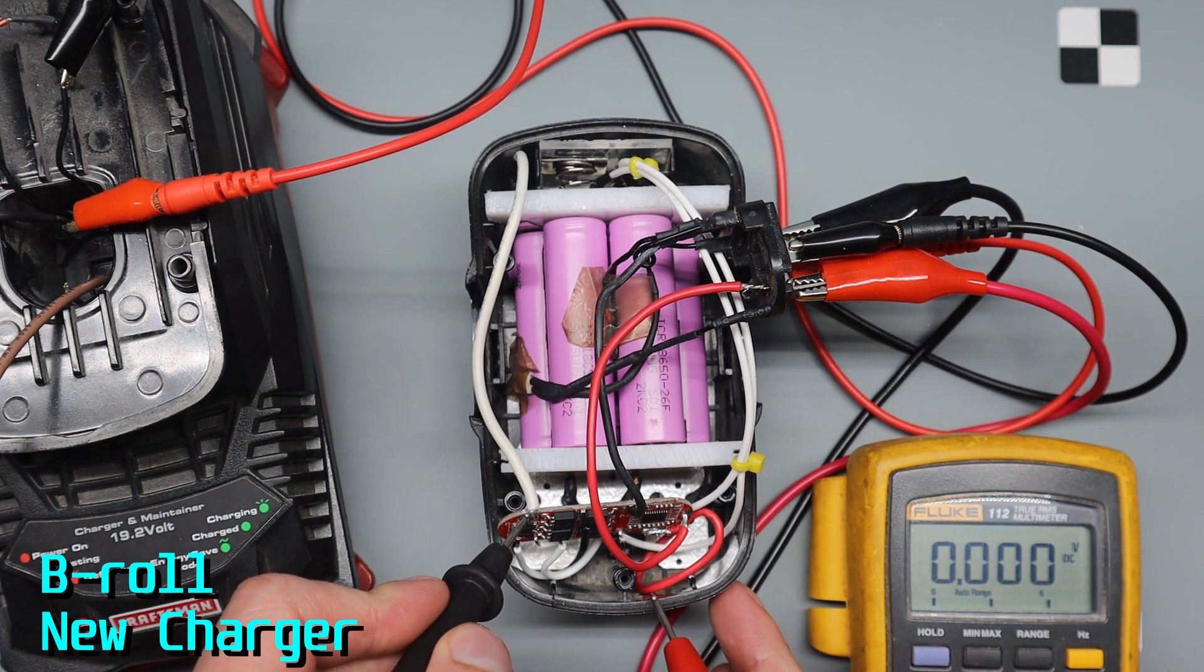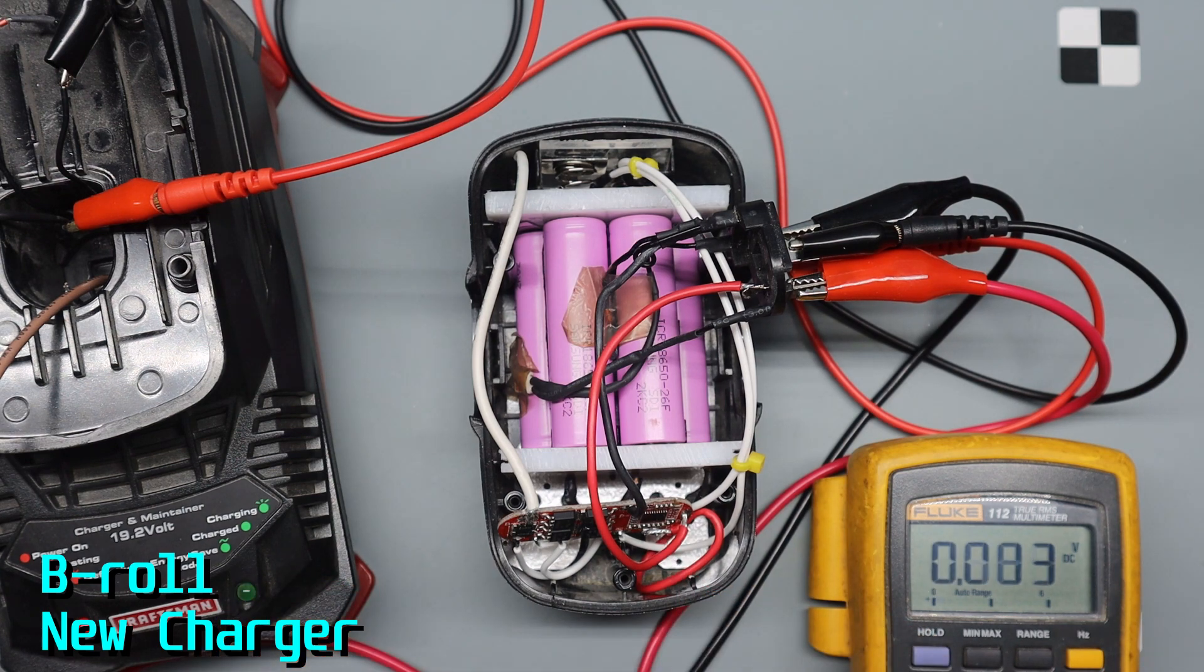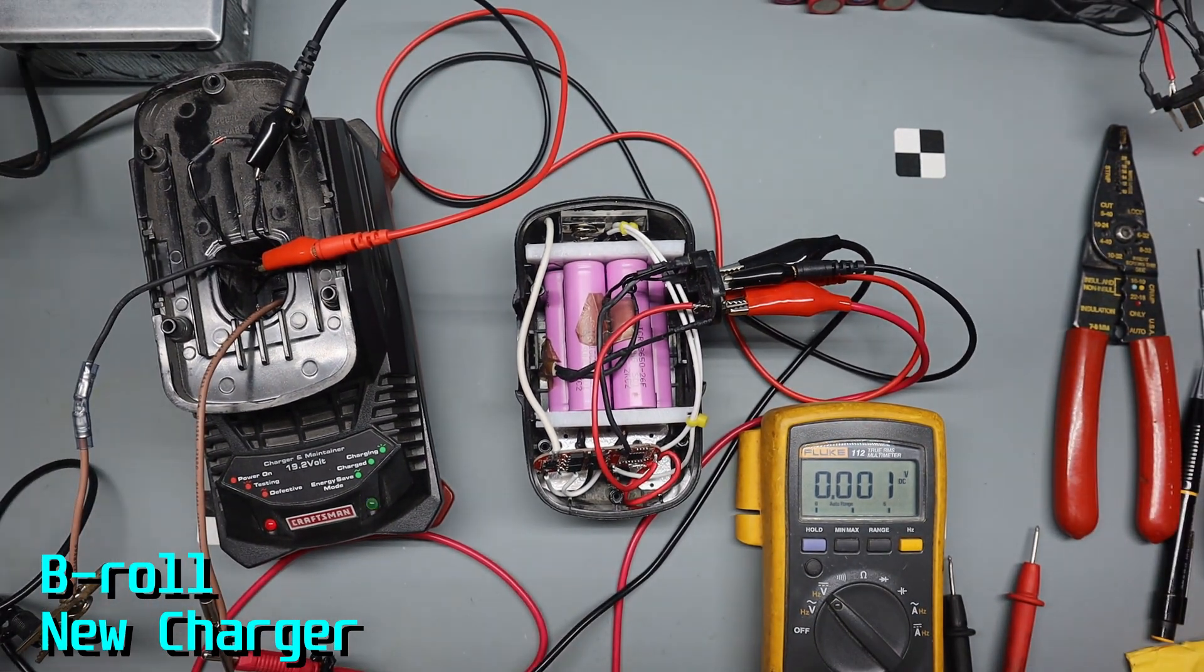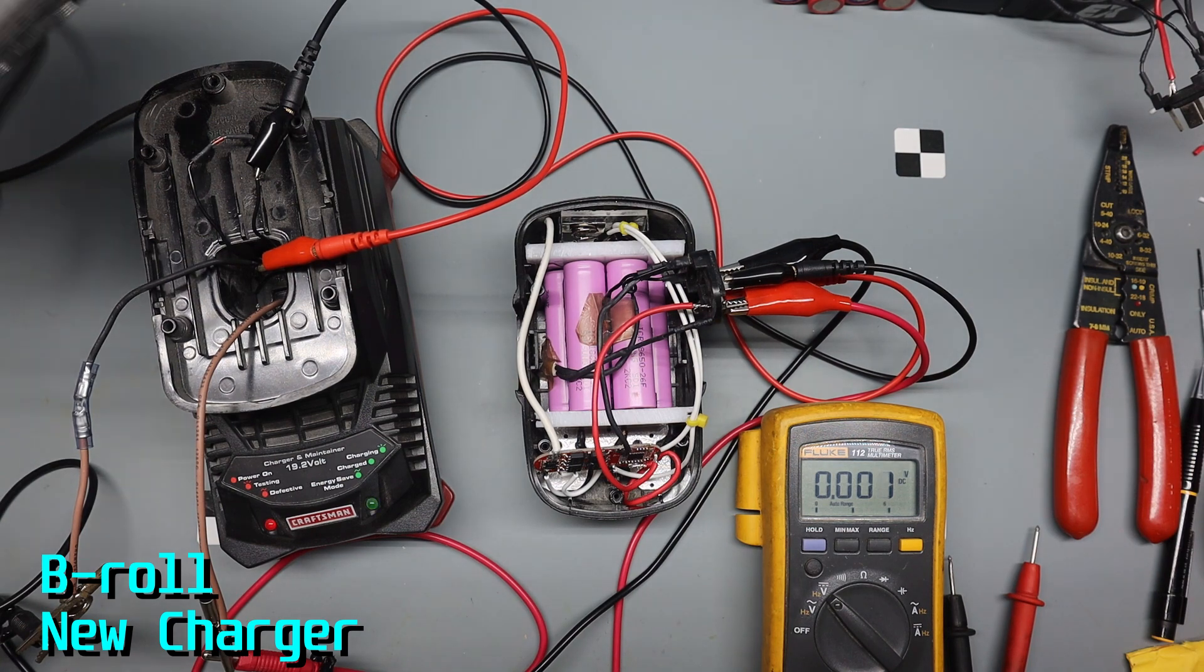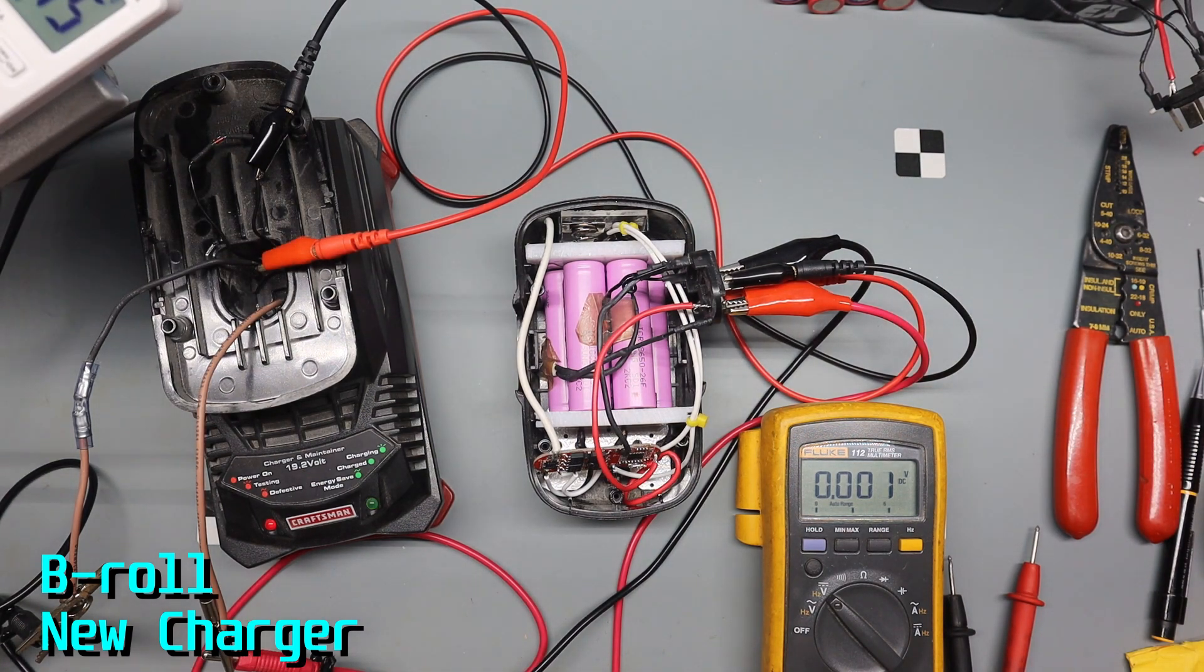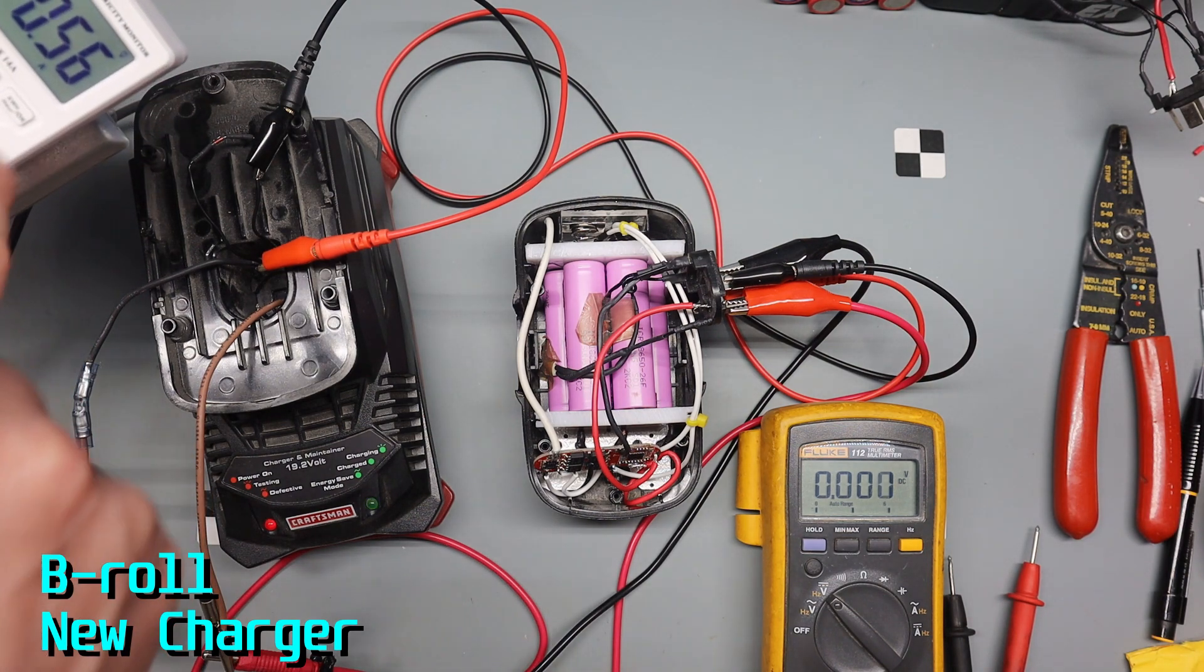So I'm not exactly sure why that is. As you can see, the chargers are bringing these batteries up to about 4.1 volts, so not fully charged. And that was about 20.5 on both of these, I believe. I'll have to recheck that when I look back at the video.